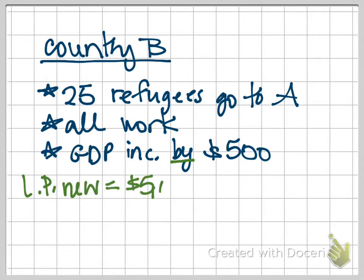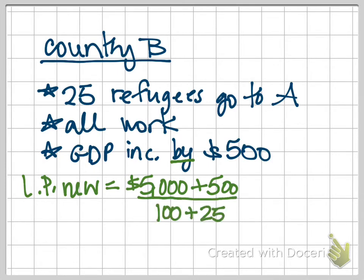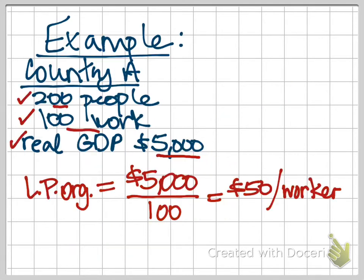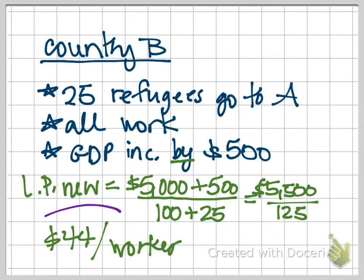We're going to calculate our new labor productivity. Originally we had GDP of $5,000; we are adding to that another $500. We had 100 workers, and we're adding 25 new workers. So now we have $5,500 divided by 125 workers. If you do the math, our new labor productivity is $44 per worker. Originally our labor productivity was $50 per worker; it is now only $44 per worker.